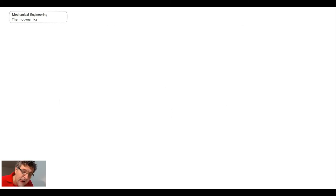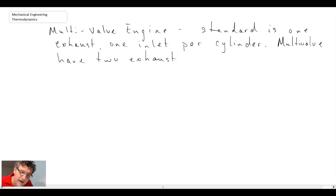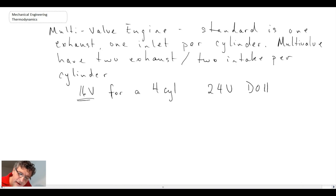Multi-valve engine. Here the standard is one exhaust, one inlet per cylinder. And what multi-valve has is two exhausts, two intake per cylinder. And you'll see these, for example, if it's a four-cylinder engine, it would be 16-valve. And you'll sometimes see this on the back of the car. 16V, that would denote 16-valve. Or sometimes you'll see even 24-valve double overhead cam. These are different acronyms that you'll see on cars or on the engine block itself.